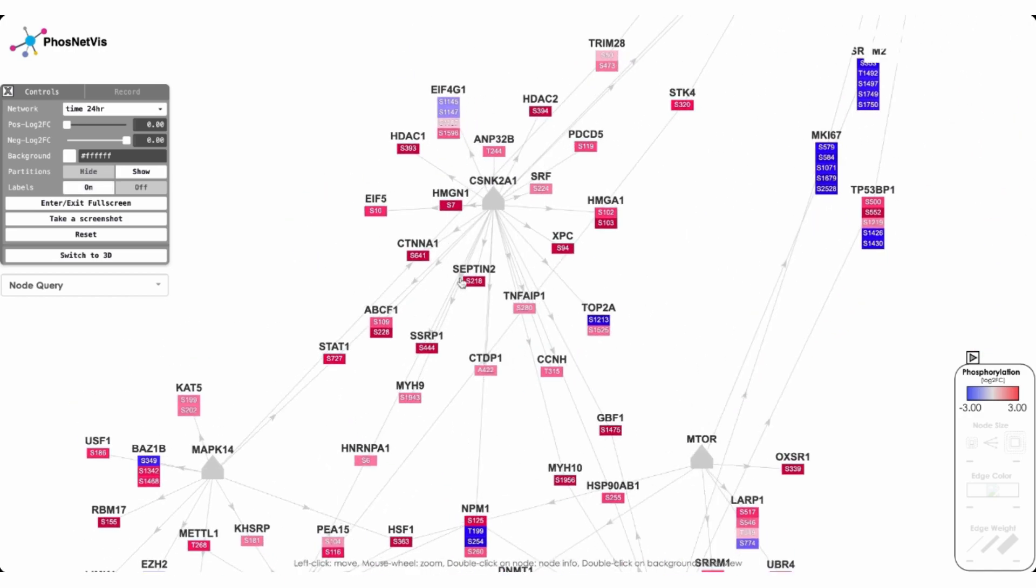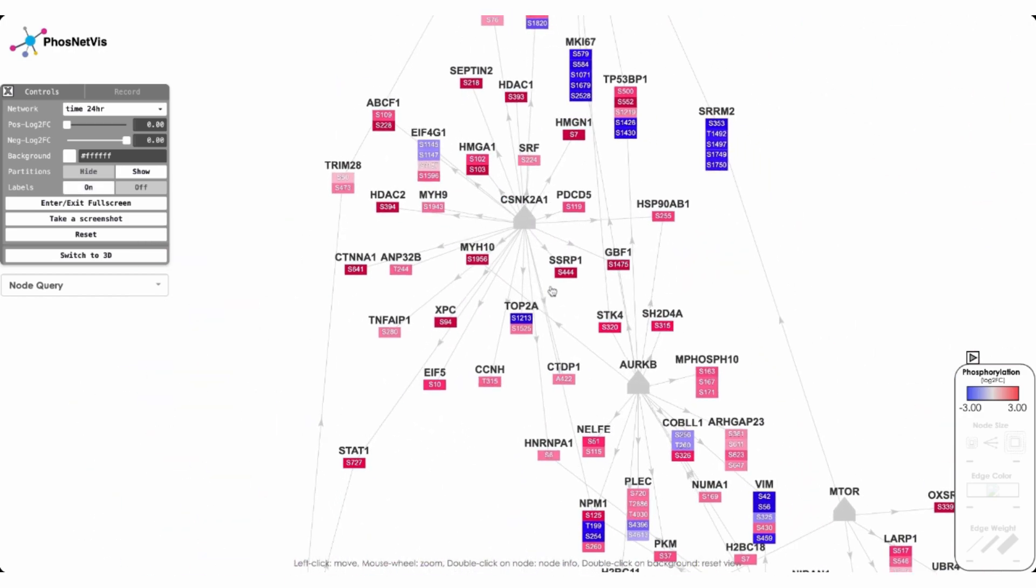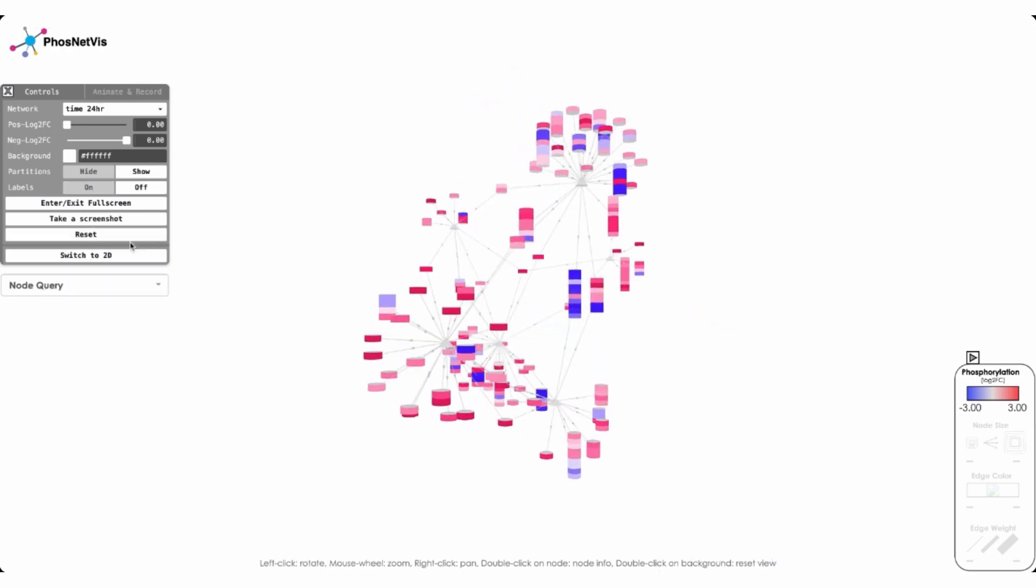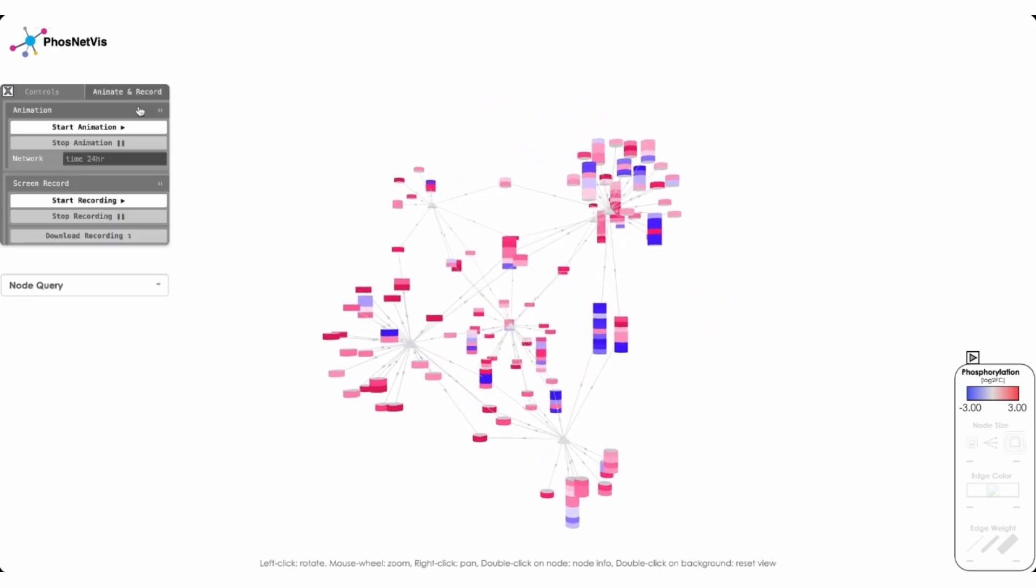And then we can see the same node in 2D. And here we can also see what are the specific sites that are phosphorylated on its target proteins and their levels of phosphorylation. And then here is the site ID. And let's go back to 3D. And in addition, we may want to see how this network changes over time.